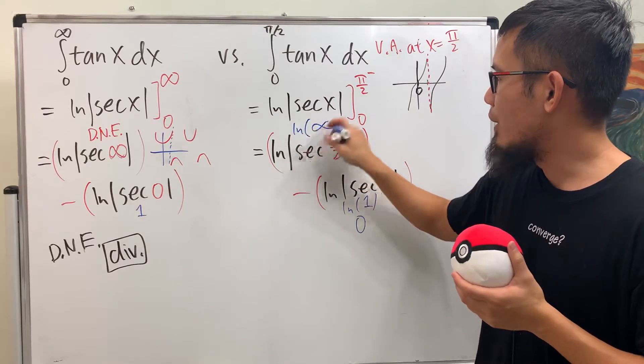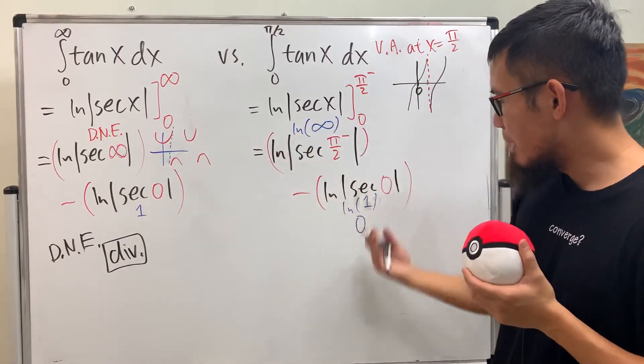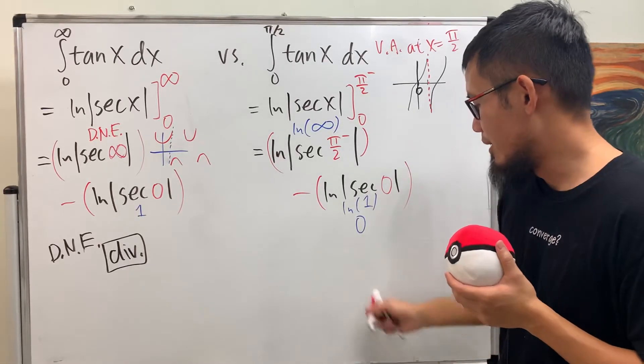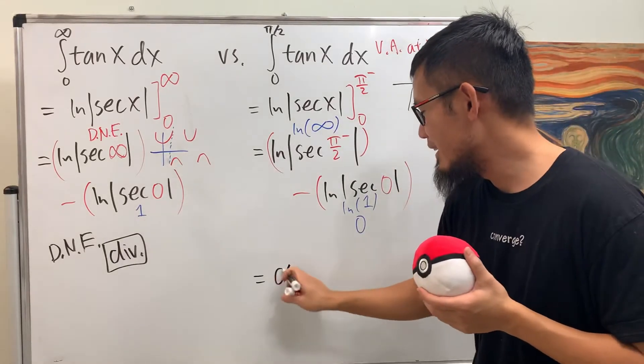And then, when you do ln of infinity, this gives you infinity. Infinity minus infinity gives you 0. No, just kidding. Infinity minus 0 gives you infinity.